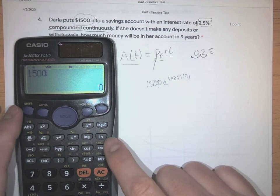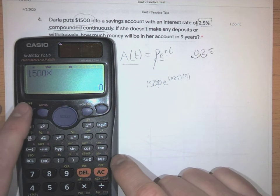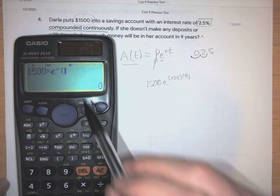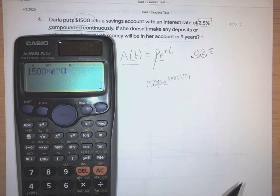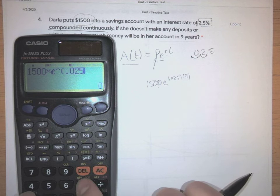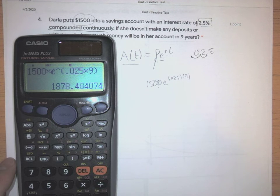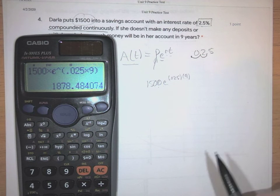So I'm going to go times, and then I'm going to go shift ln. That's going to give me e to the power of. And then in these parentheses here that it gives me, I'm going to do .025 times nine. So that's all in one shot. That's my final amount right there.